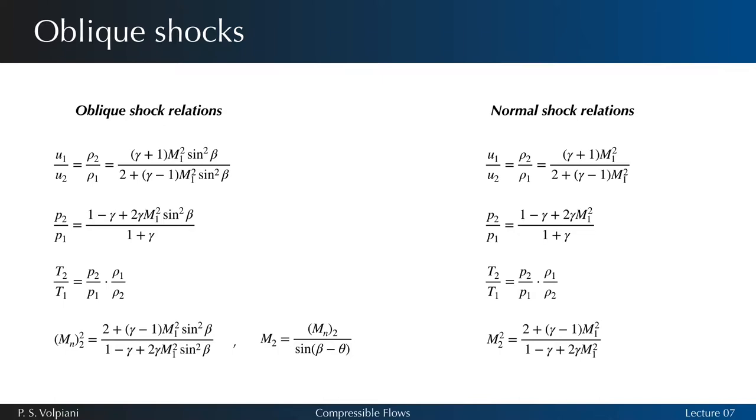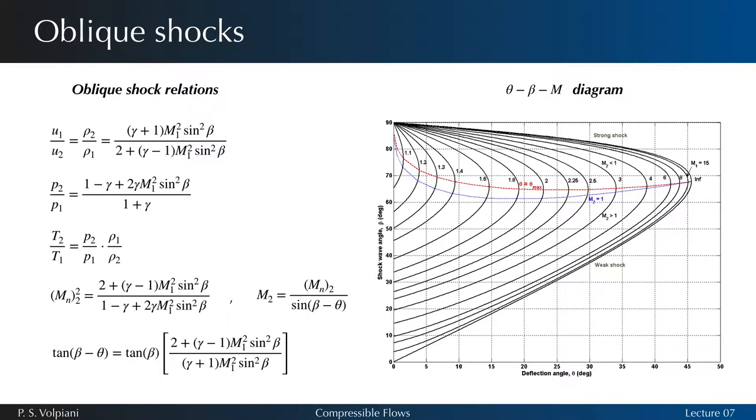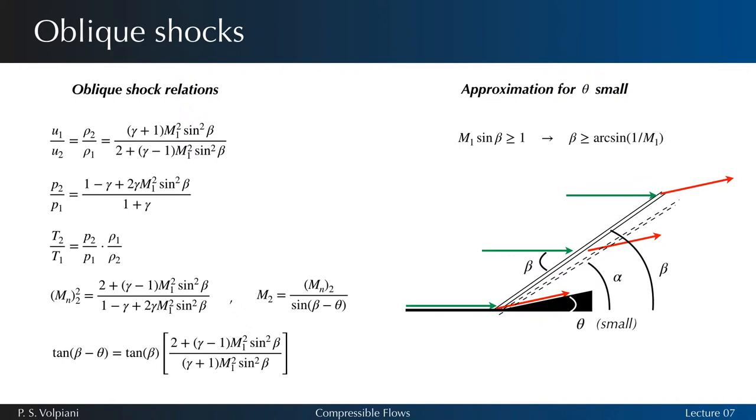We also derived an expression relating theta, beta and the upstream Mach number and we saw that a diagram could be built. Note that to have a shock the normal upstream Mach number M1 sinus beta must be greater than 1, which means that beta is greater than arc sinus 1 over M1.